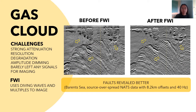Continuing with the next geological setting, the gas cloud: the concerns here are strong attenuation, resolution degradation, and amplitude dimming. Because of the strong absorption, there will be barely any signals left for the rest of the imaging. However, in FWI, diving waves and multiples can be used to image the rest of the subsurface. This example was taken from the Barents Sea using 8.2 km offsets with a frequency of 40 Hz. Despite the gas cloud effect, the faults can be imaged clearly when using FWI.